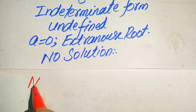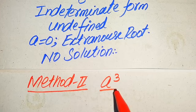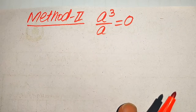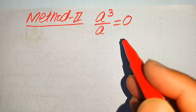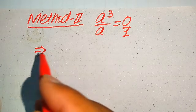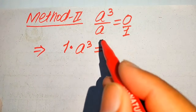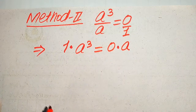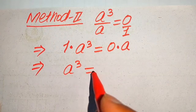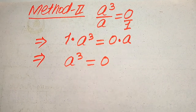Now we move to our second method. We copy the given equation: a cubed divided by a equals 0. In this method we use a smart way to find the roots of a. Since the denominator on the right-hand side is 1, we cross multiply. Multiplying 1 by a cubed equals multiplying a by 0, giving 0 times a. So a cubed equals 0.